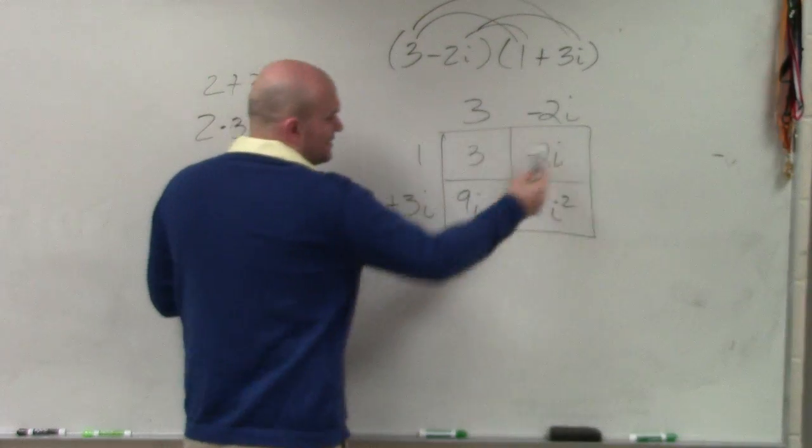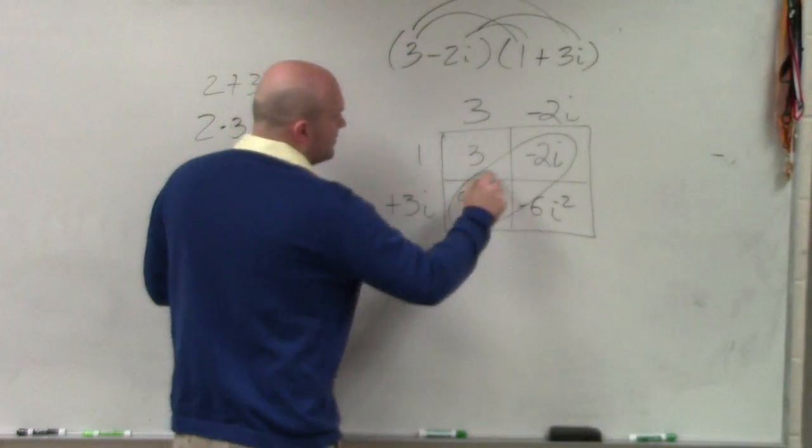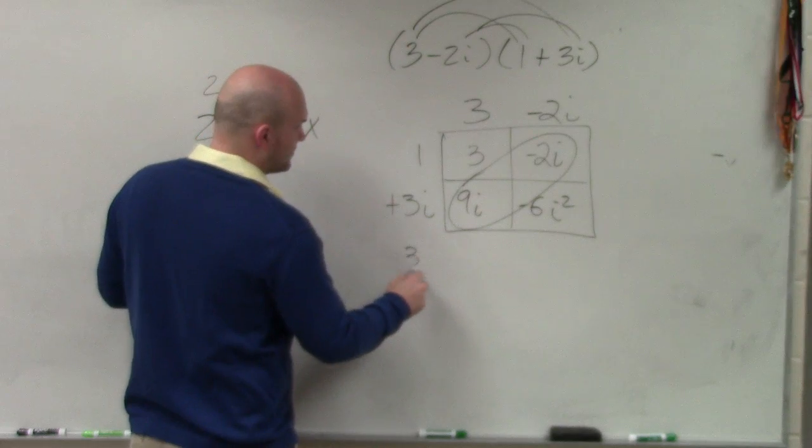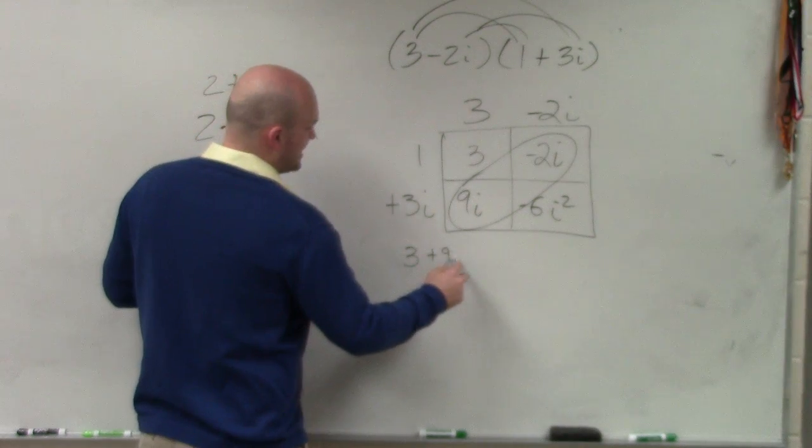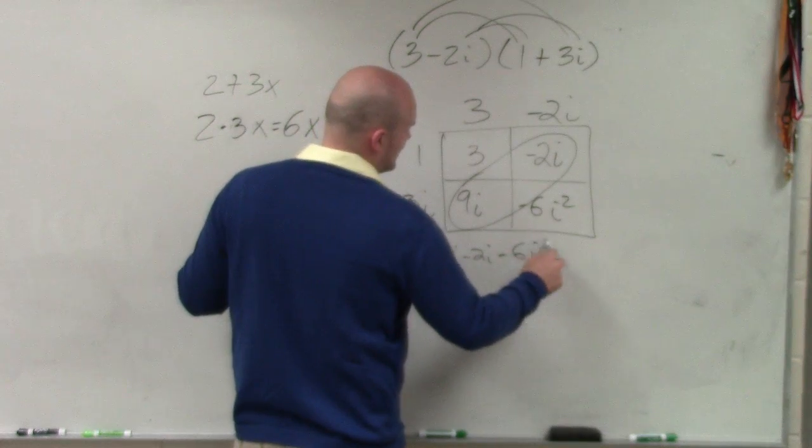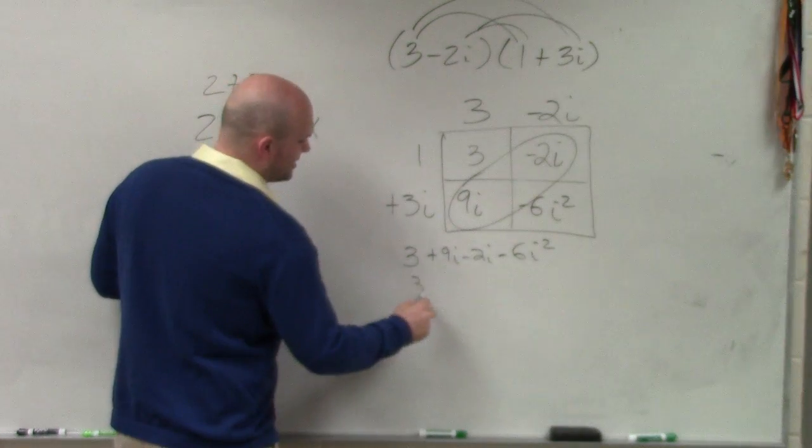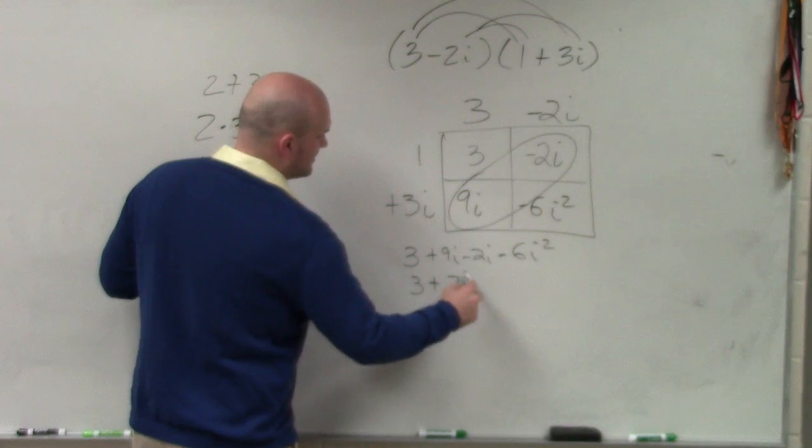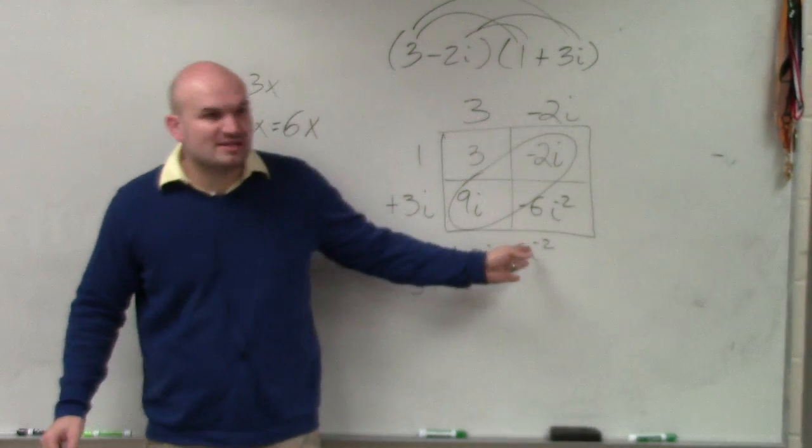So now we write everything in descending order. We notice we can combine those. So I have 3 plus 9i minus 2i. It should be 7i. I just figured I'd write it out. This becomes 7i, right? 3 plus 7i. Now, ladies and gentlemen, what's i squared represent?